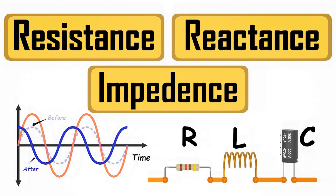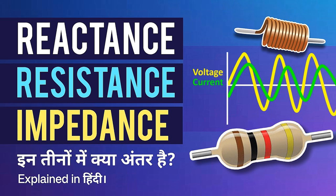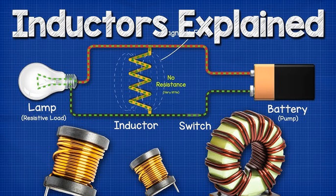Power dissipation: resistors are commonly used for dissipating electrical power in circuits. They convert electrical energy into heat energy due to the flow of current through them. This property is utilized in various applications where controlled power dissipation is required. These are just a few examples of the many applications and functions of resistance, R, in electrical and electronic circuits. Resistors are versatile components that play a crucial role in controlling current flow, adjusting voltage levels, and shaping the behavior of electronic systems.